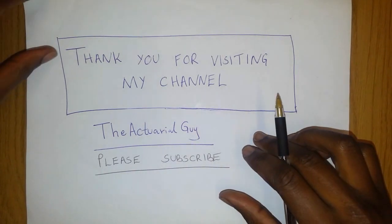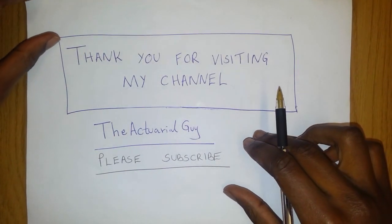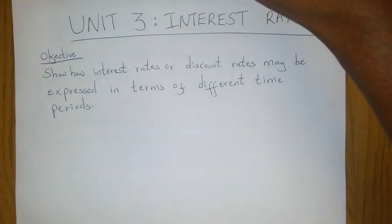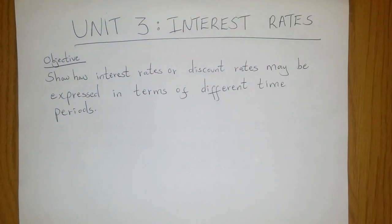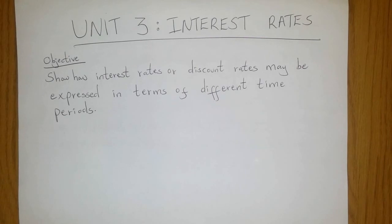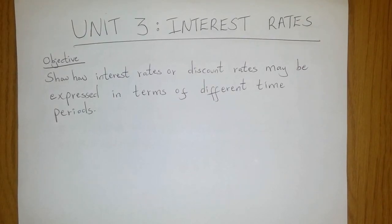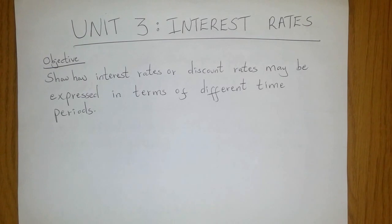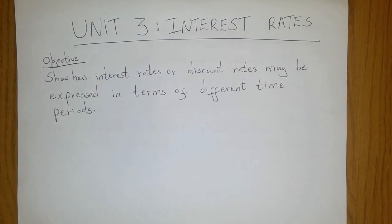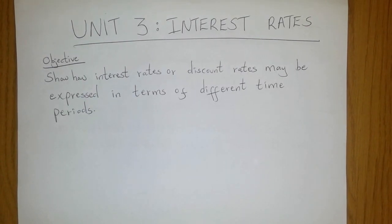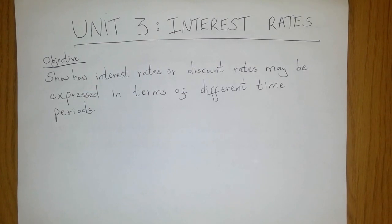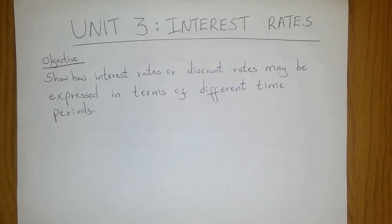Alright, let us go on to Unit 3. Unit 3 deals with interest rates, and our objective under Unit 3 will be to show how interest rates or discount rates may be expressed in terms of different time periods.